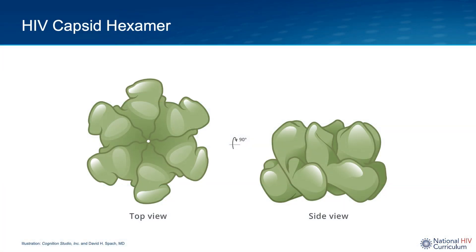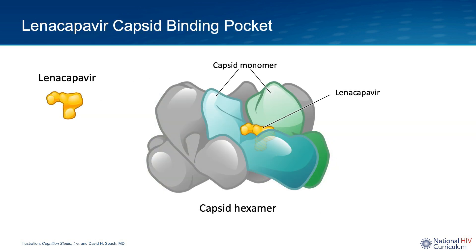The main structural subunit of the HIV capsid is the capsid hexamer, which consists of six capsid monomer proteins linked together. This illustration shows the capsid hexamer from a top view on the left and a side view on the right. Looking at a side view of the capsid hexamer, this illustration shows how the small molecule linacapavir fits in a hydrophobic pocket between two neighboring capsid monomer proteins, forming a hinge between these proteins.